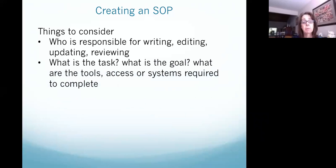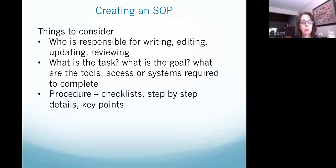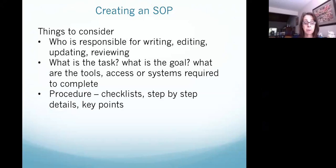What is the task? What is the goal? What are the tools, access, or systems required to complete the task? An SOP can be a very technical detailed document listing all the steps, or it can be as simple as a checklist with step-by-step details and key points. Perhaps you want to create a checklist for your month-end procedures — list all the activities that you're doing, in the order you're doing them, and create a checklist. You could create one for the whole year with 12 columns, one for each month.